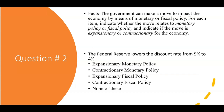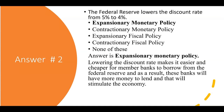Number two: the Federal Reserve lowers the discount rate from five percent to four percent. That is also expansionary monetary policy. The Fed plays the discount rate card — by lowering the rate, it makes it easier and cheaper for member banks to borrow from the Federal Reserve, so these banks will have more money to lend, stimulating the economy.